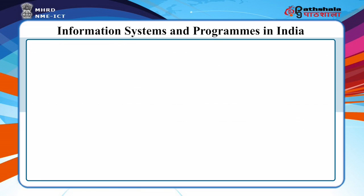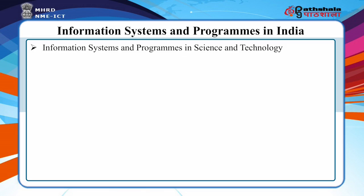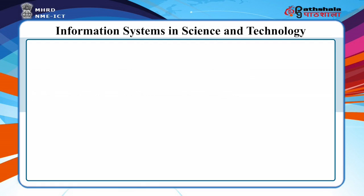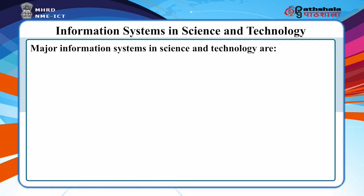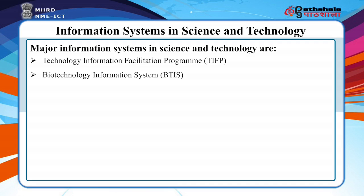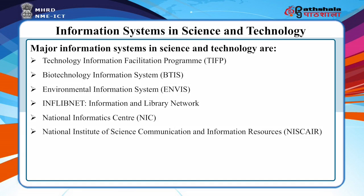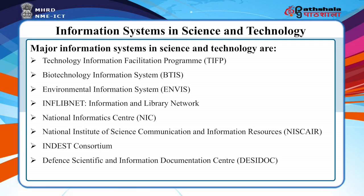Information systems and programs in India can be divided into three categories: information systems in science and technology, in social sciences, and in humanities. Some of the major information systems in science and technology are the Technology Information Facilitation Program, Biotechnology Information System, Environmental Information System, INFLIBNET, National Informatics Centre, National Institute of Science Communication and Information Resources, INDEST Consortium, Defence Scientific and Information Documentation Centre, and Indian MEDLARS Centre.